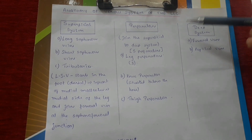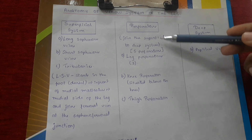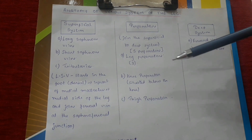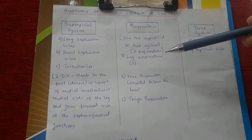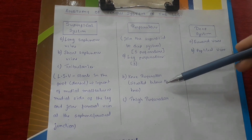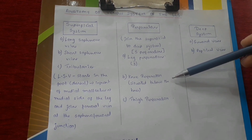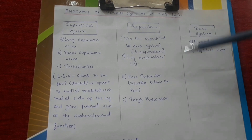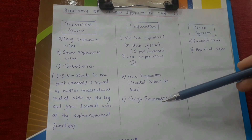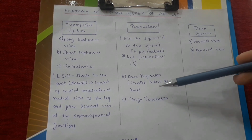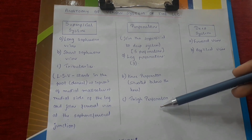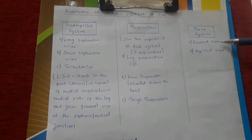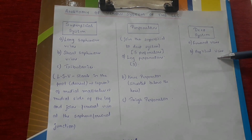The perforators join the superficial system to the deep system. There are a total of 5 perforators: 3 leg perforators, 1 knee perforator situated between the leg perforator and the thigh perforator (below the knee), and the thigh perforator. The deep system comprises the femoral veins and the popliteal veins.